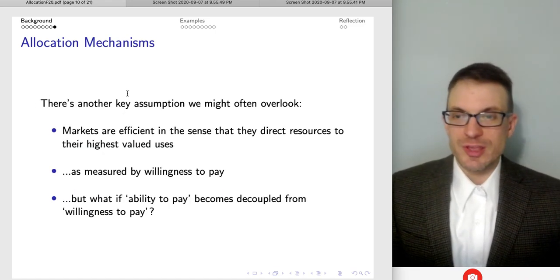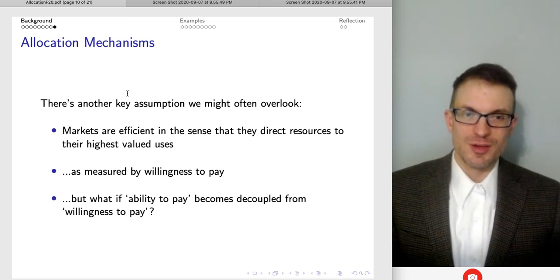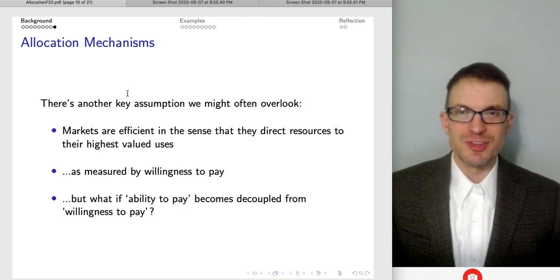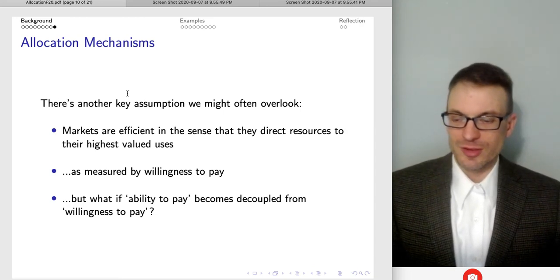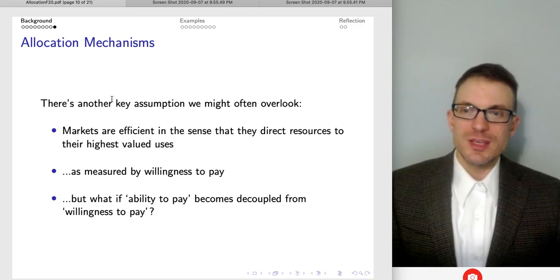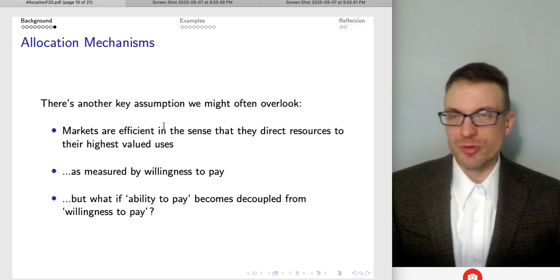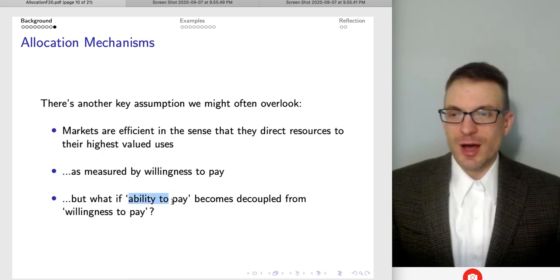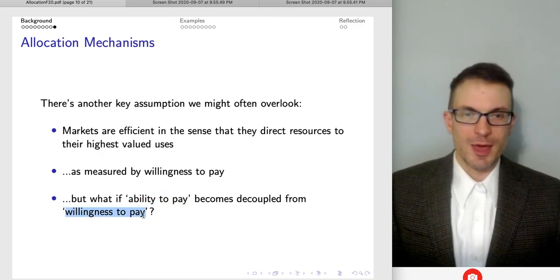So there's another key assumption, though, that we might overlook and might realize maybe to this point in the lecture, you're thinking, well, okay, markets are good, but there's some bad things about markets, too. And what about the inequality or these sorts of things that I kind of mentioned a little bit earlier? Well, one key assumption we might fail to pay attention to when it comes to thinking about the workings of markets is the decoupling, potentially, between ability to pay and willingness to pay. So think back to principles of econ. Think about the demand curve.